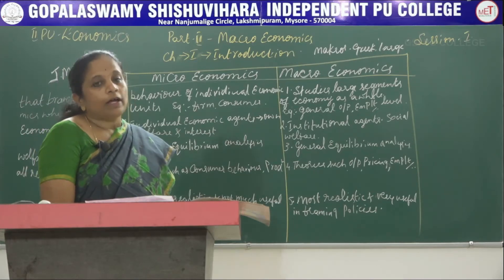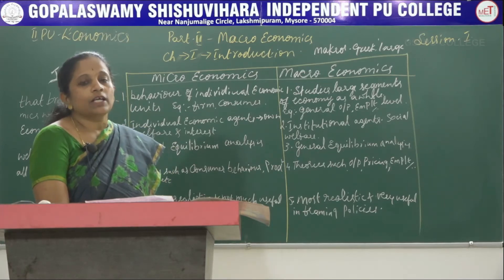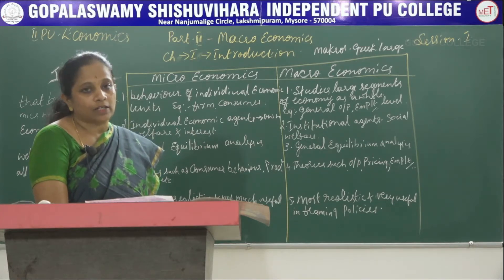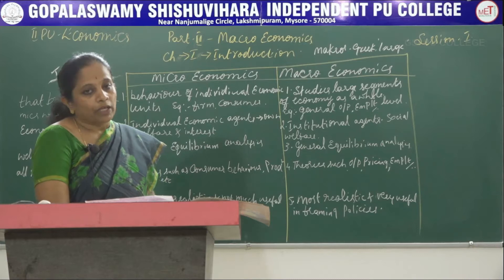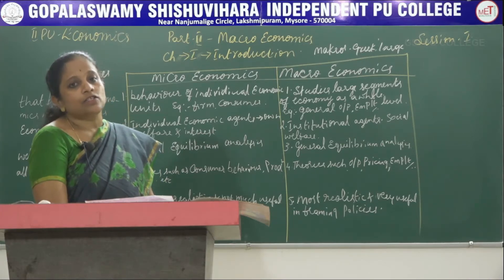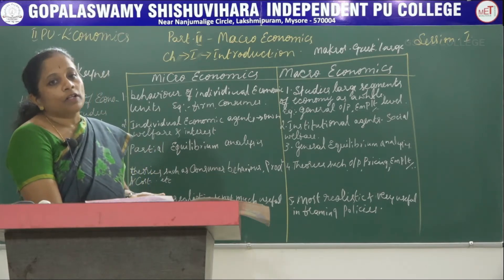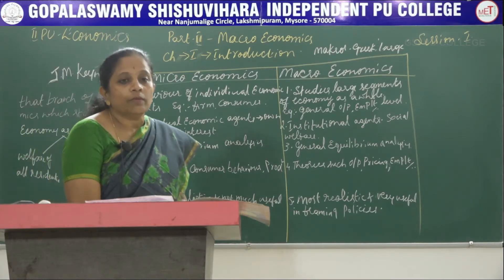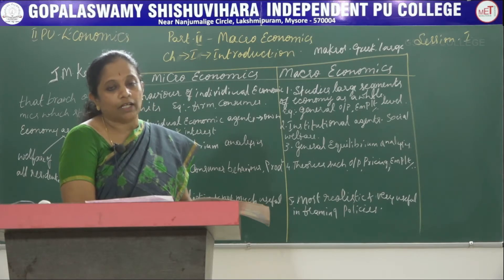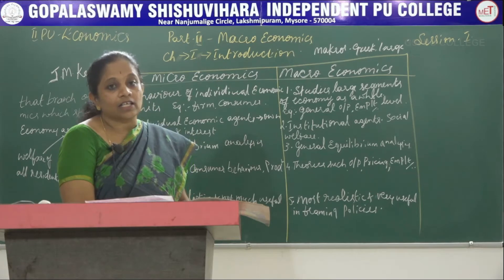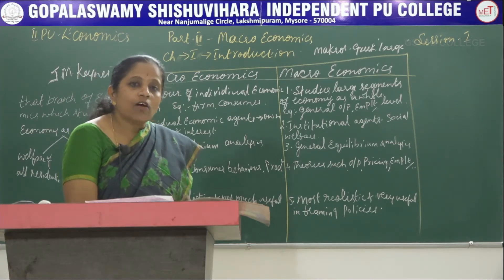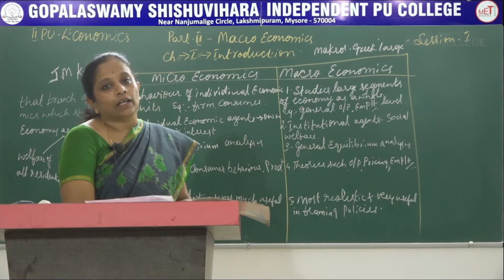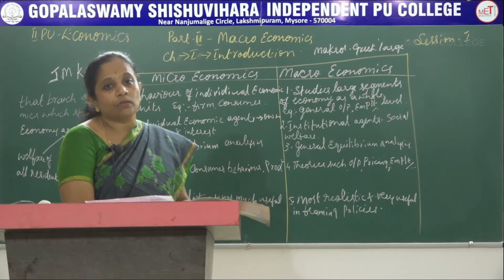Adam Smith is the father of modern economics, but when we study macroeconomics it is important to know that the father of macroeconomics is J.M. Keynes — John Maynard Keynes. Keynes wrote a book in 1936 on the general theory of employment, money, and interest, in which he referred to the interdependence of different sectors. The emergence of macroeconomics was felt after this book was published in 1936.